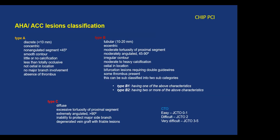Regarding lesions, not all 80% stenoses are the same. It can be a type A lesion, which is very simple, to type C, which is complex, and on top of that they can have an occluded vessel — going from easy to very difficult. It depends on the JCTO score and how we are able to open them.